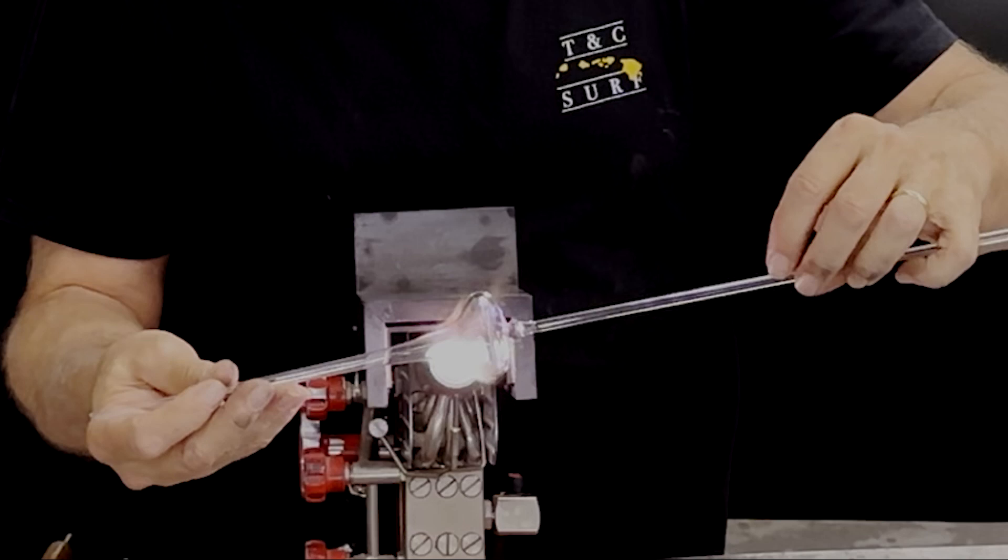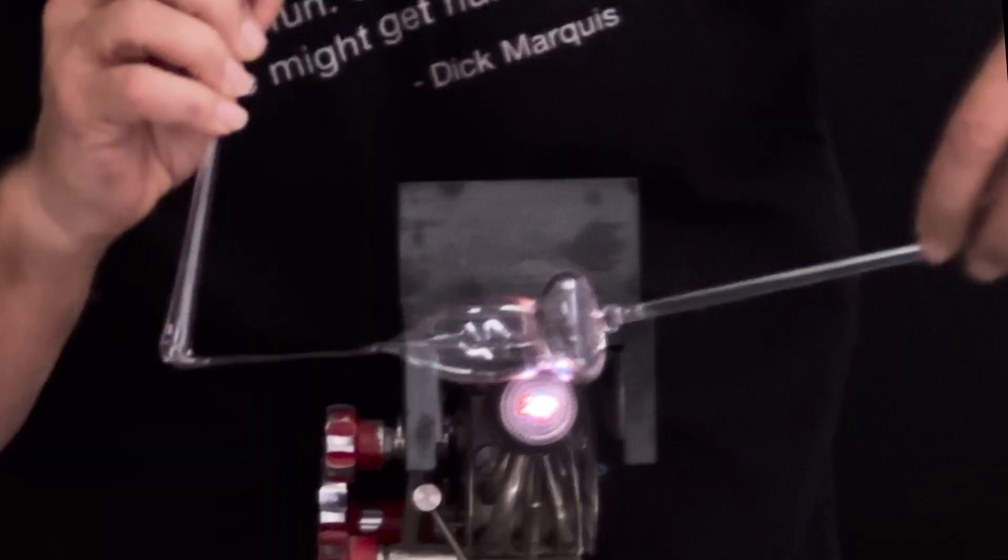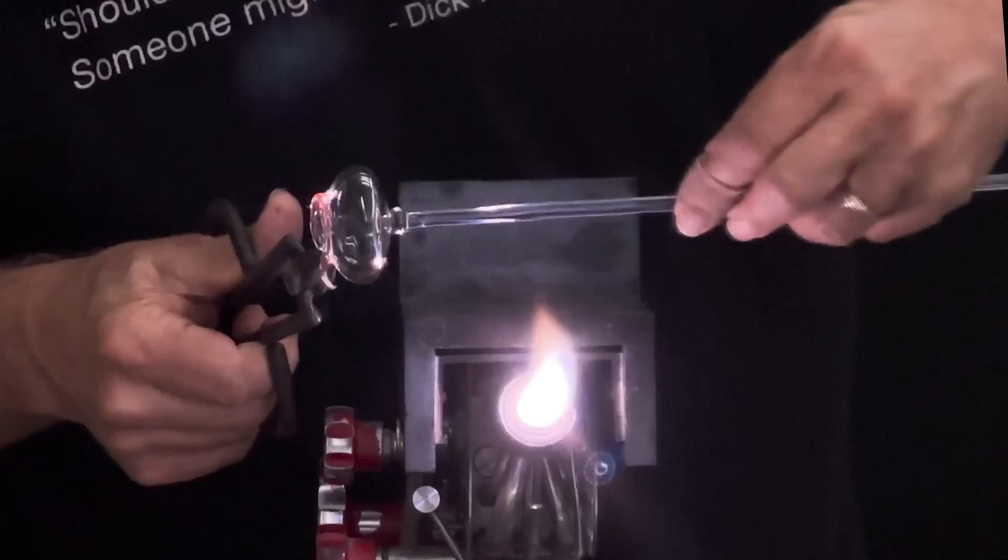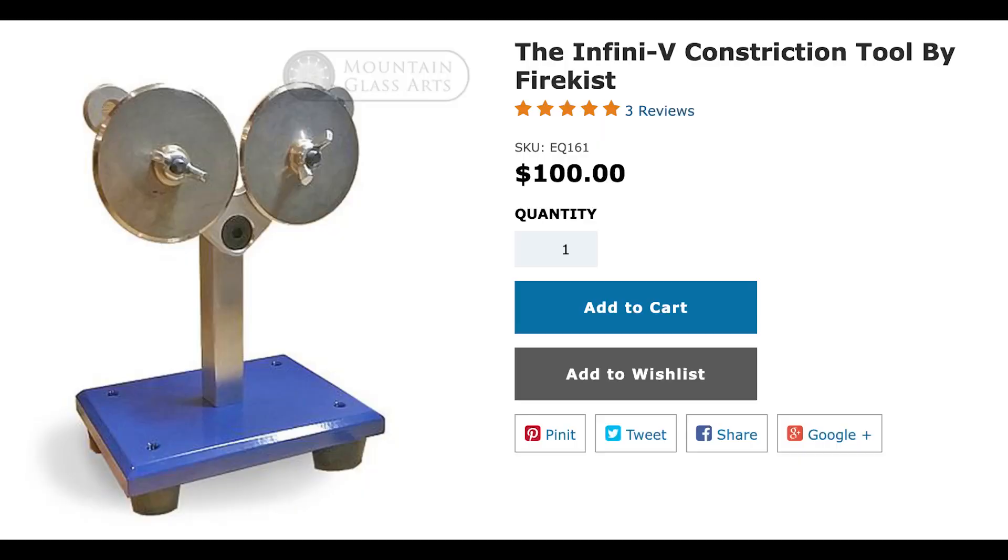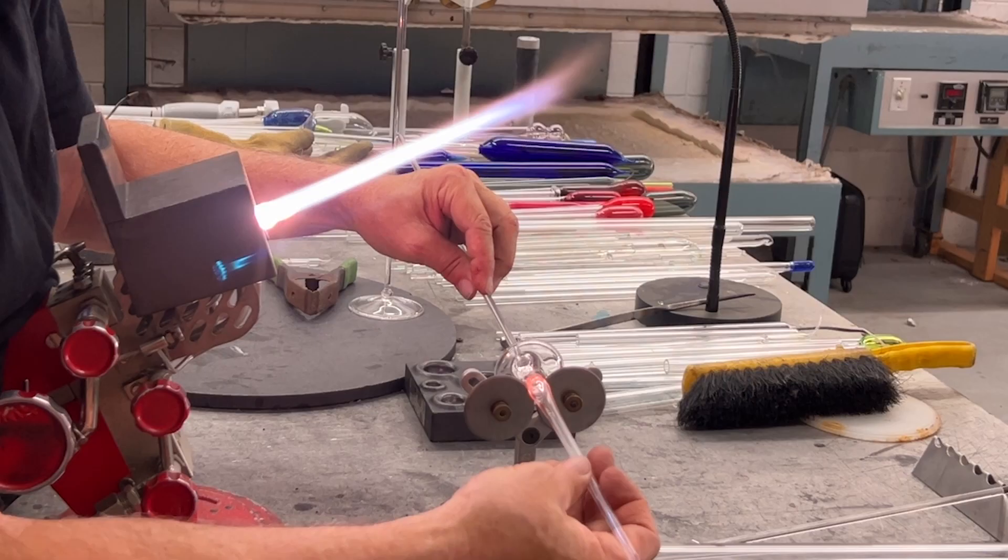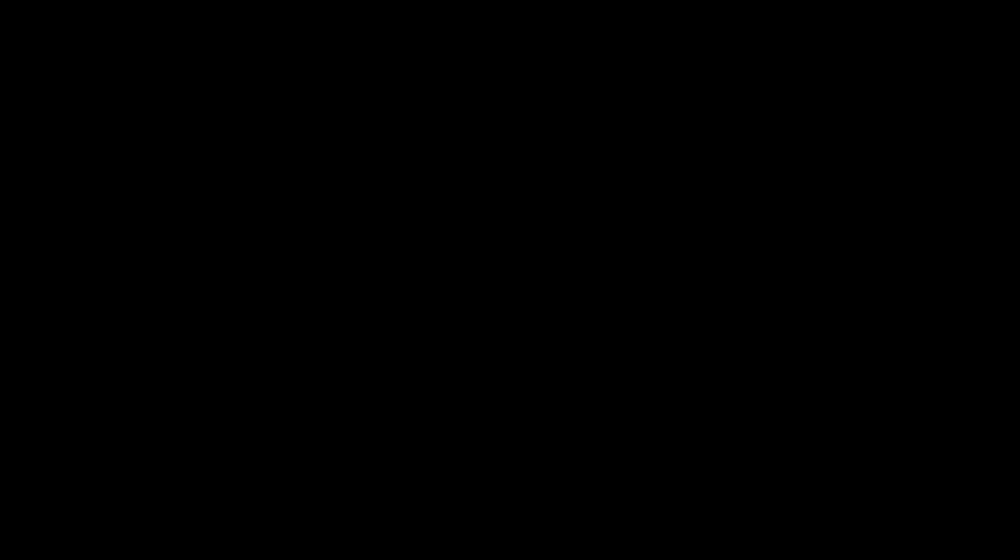The next step is to remove the point. Many people use jacks to neck down the point and diamond jacks to break it off cleanly. I have always simply done a flamecut and trimmed the lip with shears. Both methods work well. For today's demo, I'm using the IFINI-V constriction tool by Firekist to take the place of the jacks. This method is much quicker than the old flamecut and shear method I used to use. There is a link in the description for this tool.